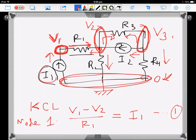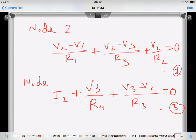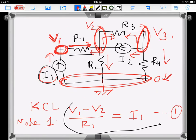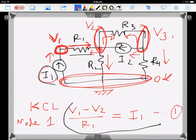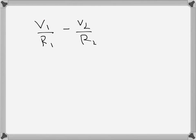In the previous video we developed three simultaneous nodal equations. Now I will rewrite them in a form so that we can solve them. Equation 1 is: V1 over R1 minus V2 over R2, and on the right hand side we have I1.